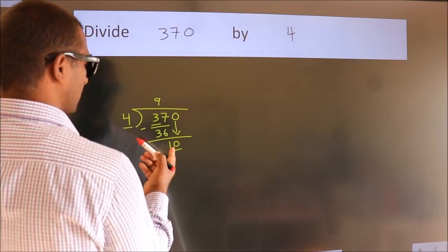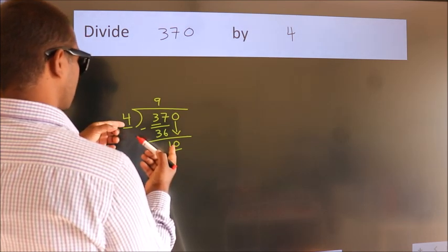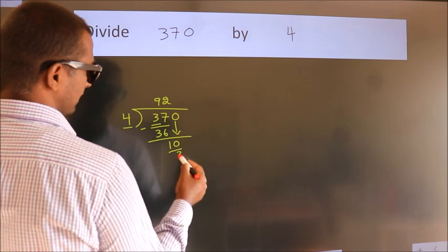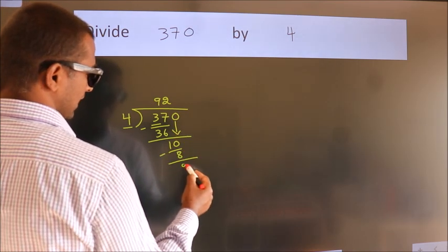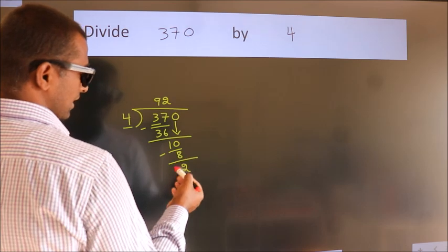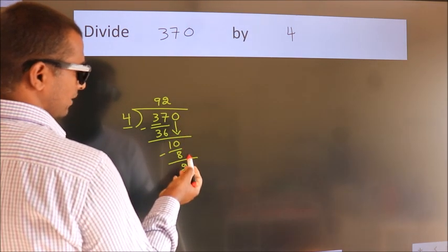A number close to 10 in the 4 table is 4 times 2 equals 8. Now we subtract. We get 2. After this, no more numbers to bring it down.